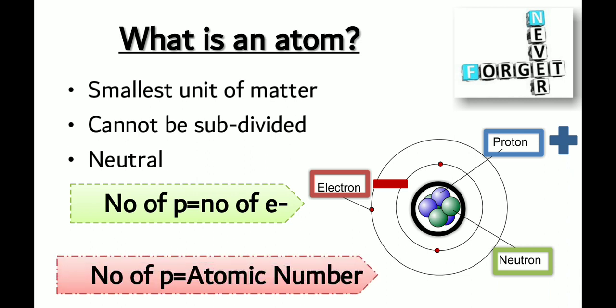The number of protons in an atom is called the atomic number. We call it the atomic number because it is actually the identification of the atom. If the proton number changes, our atom changes. So if one atom has 6 protons and another has 7, they are different atoms. This is why we use this number as the identification number of the atom.